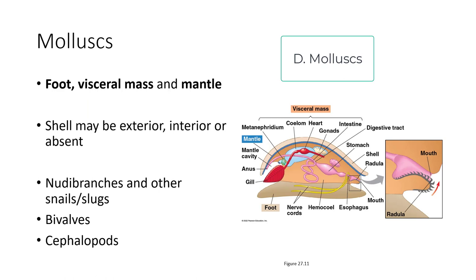Taking a look at the mollusks, three things unite them: a foot, a visceral mass, and a mantle, which often gives rise to a shell. That shell can be on the exterior, such as with snails; on the interior, such as with squid; or absent, like slugs. Nudibranchs and other snails and slugs are in this group. Bivalves such as clams are in this group, as are cephalopods such as octopi.